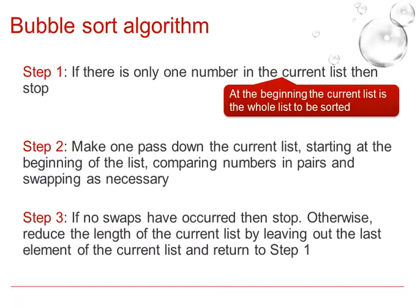So this is the bubble sort algorithm, as you can see it is written in English text. Step 1, if there is only one number in the list then stop. We talk about this idea of the current list because after each pass the list changes. At the beginning the current list is your whole list to be sorted.